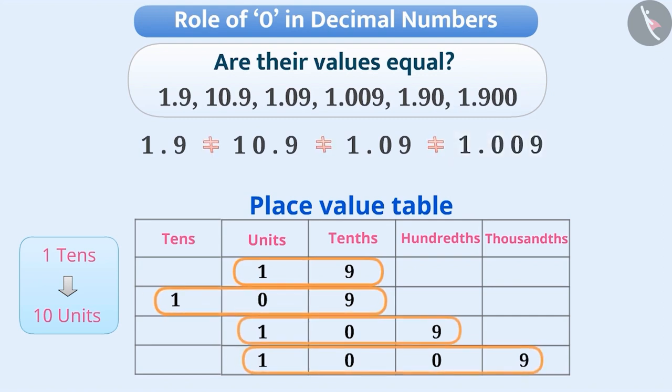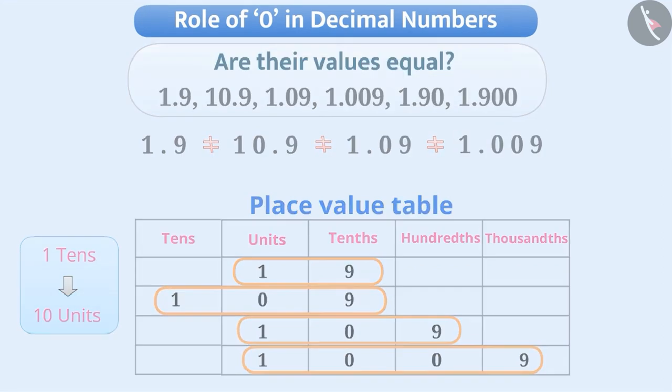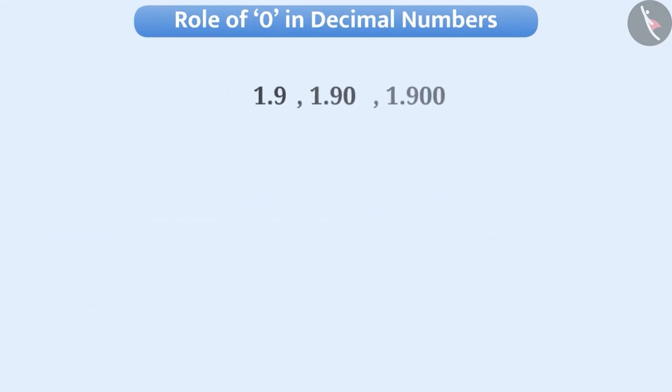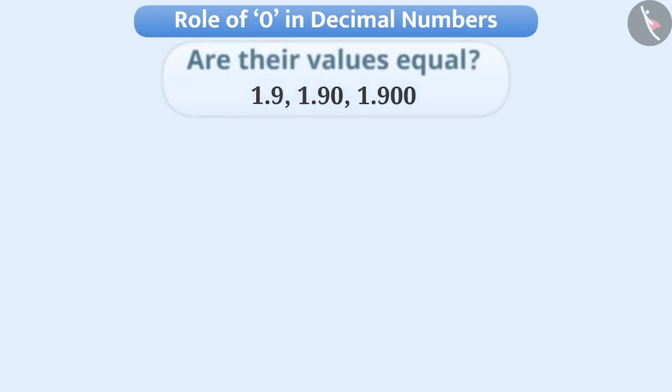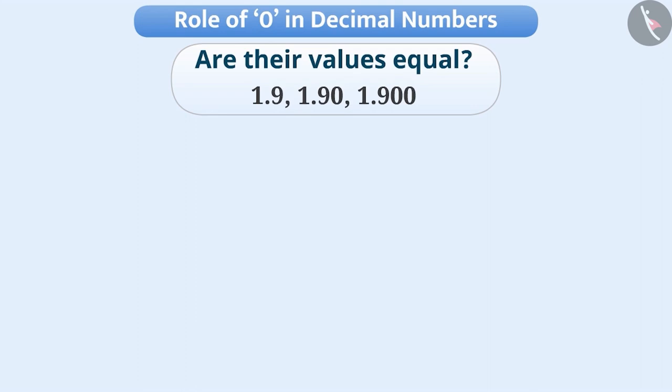Now pay attention to 1.9, 1.90, and 1.900. Are their values equal? Think for a while. Let me explain this.